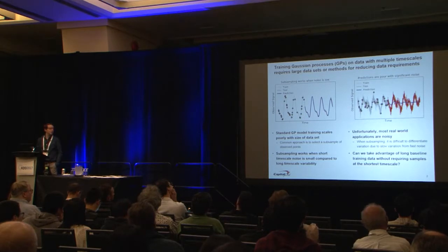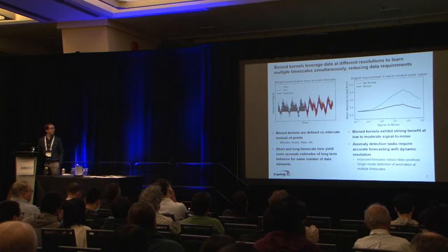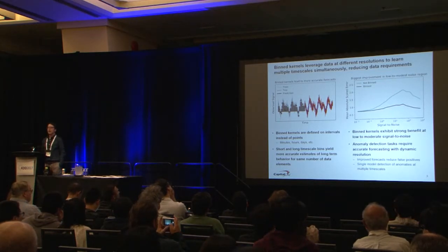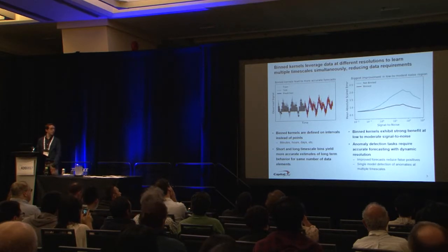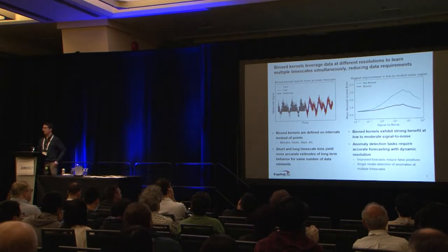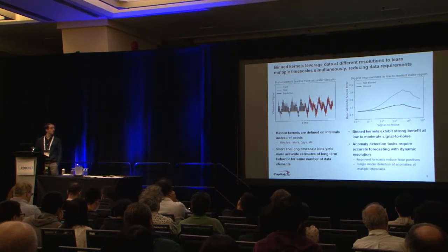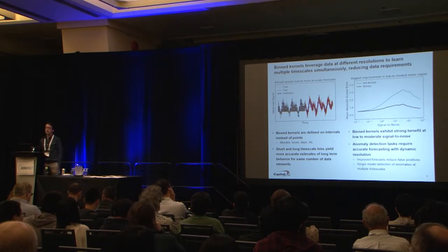We'd like to be more efficient and use our data more effectively, so we're going to use a binned approach. We define a latent GP that we never observe, and then we observe averaged versions of that GP. If you have some function that we never observe, we actually average that value over minutes, hours, days, or weeks — akin to counting the number of logins in the last minute, the last hour, the last day, the last week. By using these multiple bins at different resolutions, you can gain a lot of information about both slow and fast timescales.